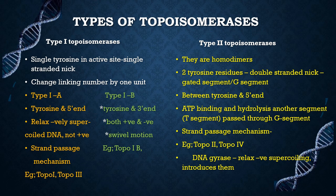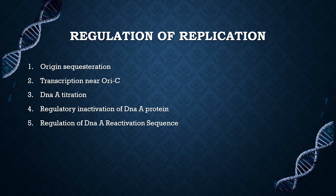Topoisomerase 4 is involved in decatenation of daughter duplexes after replication. DNA gyrase is a special kind of topoisomerase that can relax negative supercoiling as well as introduce it. In DNA gyrase, relaxation is ATP-independent, whereas introduction of supercoiling is ATP-dependent.